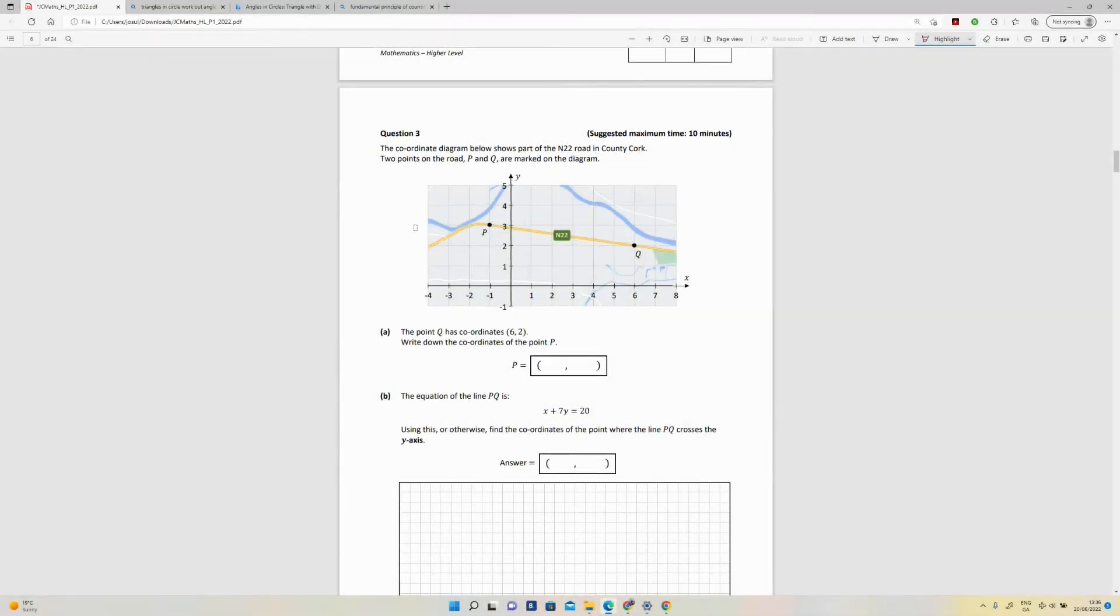Okay, question three. It's a coordinate geometry question. The coordinate diagram below shows part of the N22 road in County Cork. Two of the points on the road, P and Q, are marked on the diagram. Part A: The point Q, which is this one here, has coordinates (6, 2). Write down the coordinates of the other one. So it's just asking you to read the diagram. The point is right there. If you take the x-axis reading, it's -1, and the y-axis it's positive 3. So the answer to that part is (-1, 3).